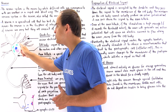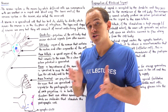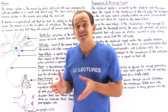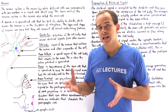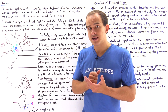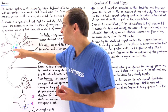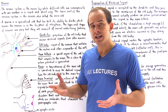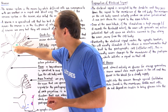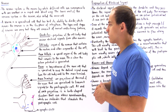The cell body, also known as the soma, is the region of the cell that stores the nucleus and other organelles — for example, the endoplasmic reticulum, the Golgi apparatus, our mitochondria, and so forth.